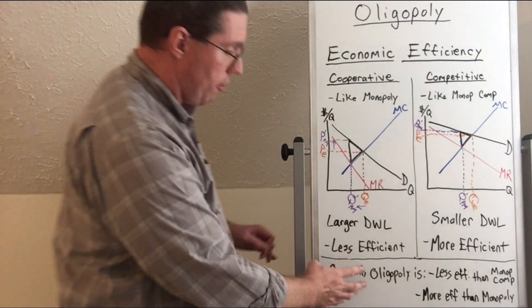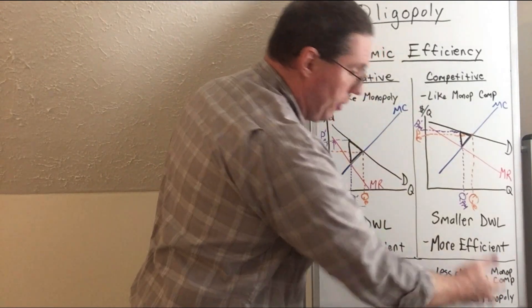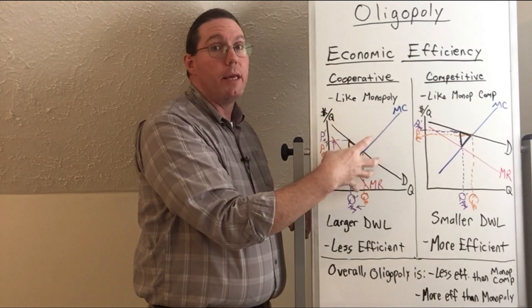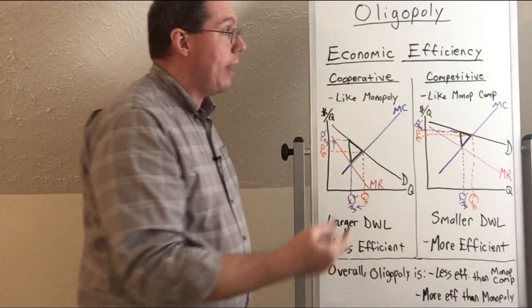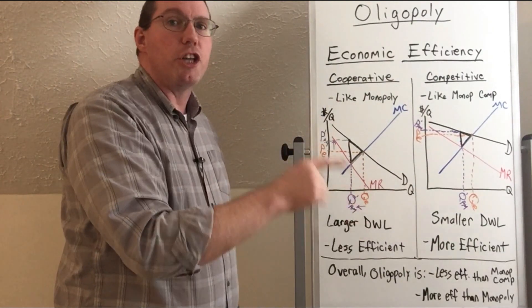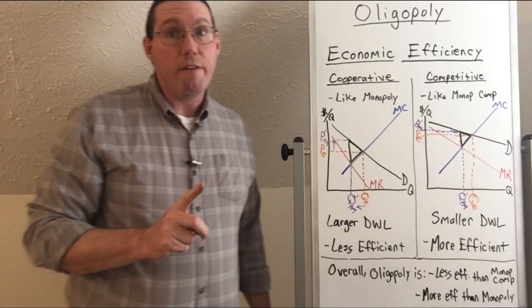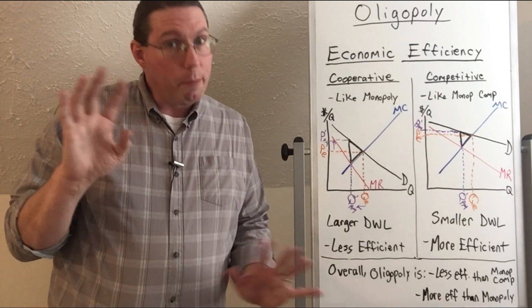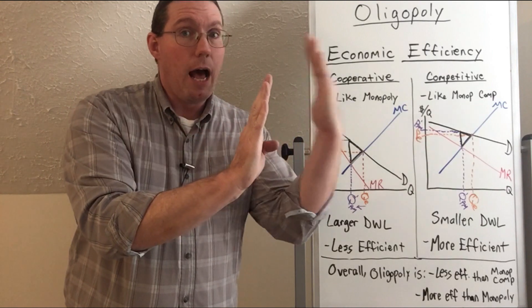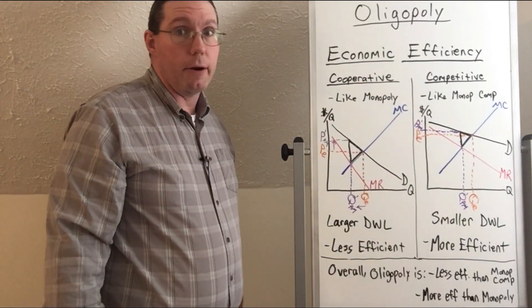Overall, oligopoly is less efficient than monopolistic competition but more efficient than monopoly. Even a cooperative oligopoly acting like a monopoly will probably still be more economically efficient than a true monopoly. The efficiency ranking from most to least efficient is: perfect competition, then monopolistic competition, then oligopoly as competitors, then oligopoly as cooperative, and then monopoly at the other end. That's all we have to say about economic efficiency.